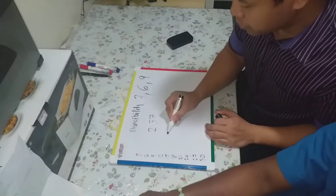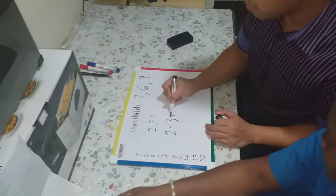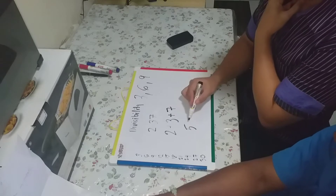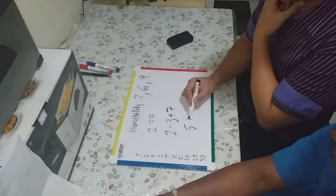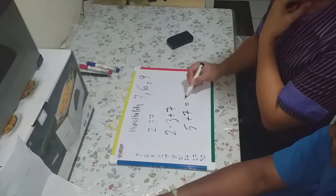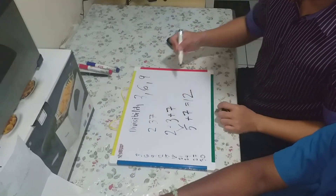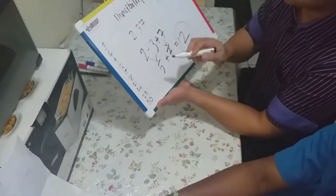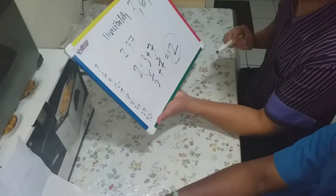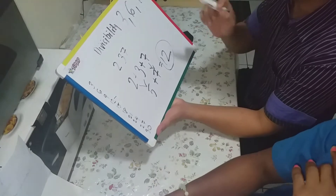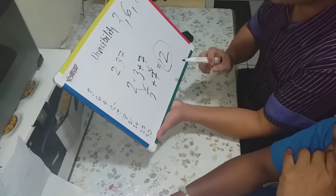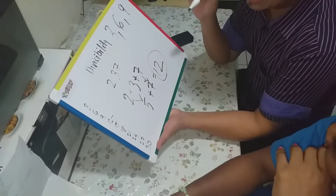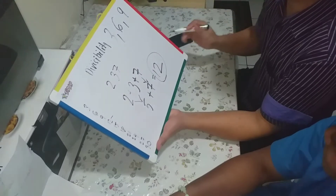Let's check: 2 plus 3 plus 7. 2 plus 3 is 5. 5 plus 7 is 12. 12 is divisible by 3 — we have 12 in our skip counting. This is a shortcut way to know if a number is divisible by 3. It is divisible by 3 because the sum is 12.